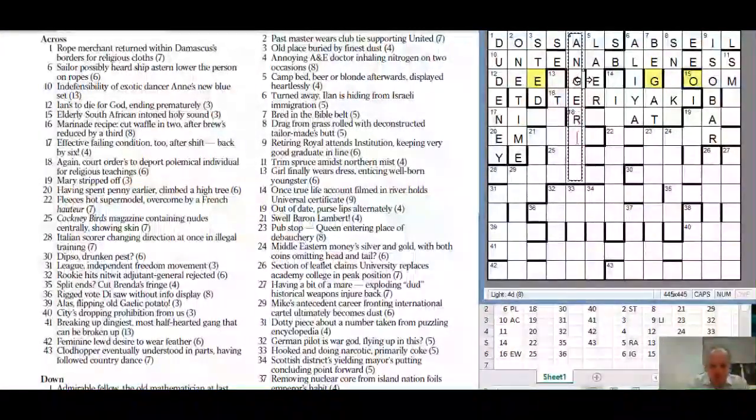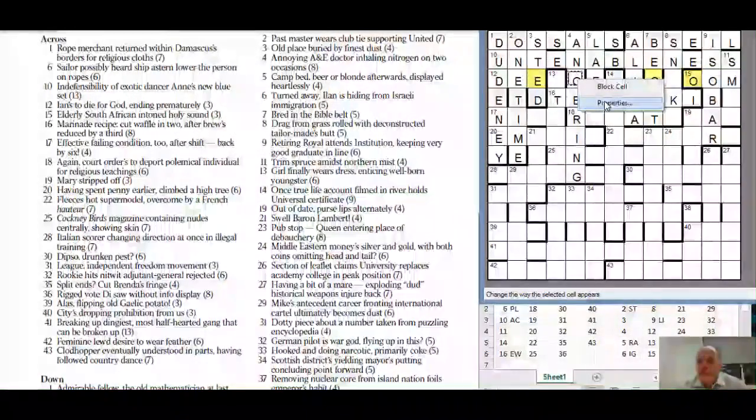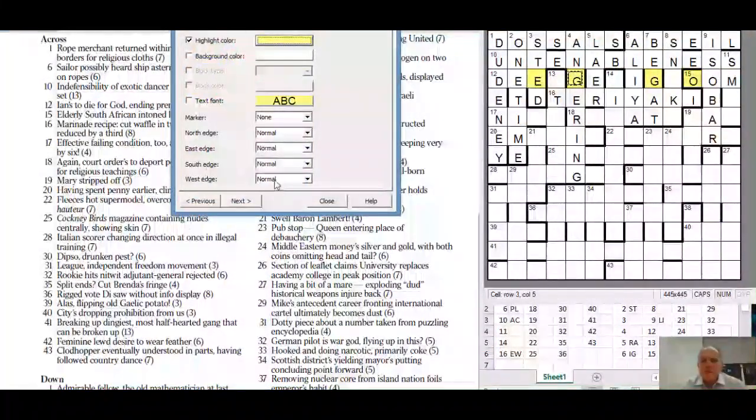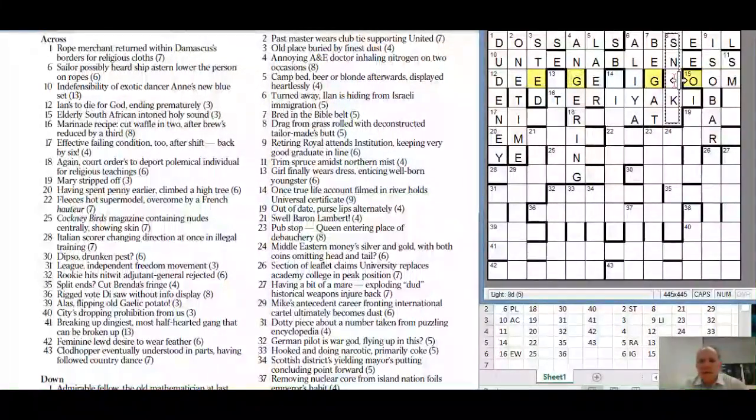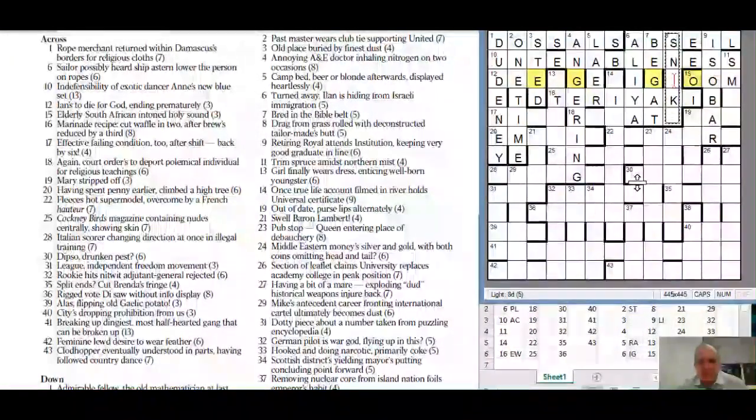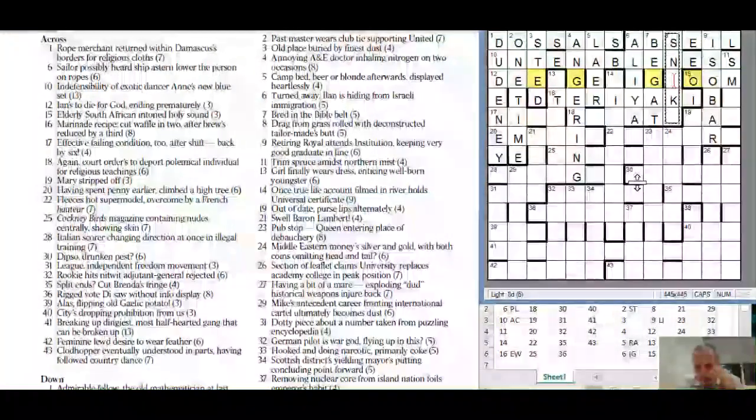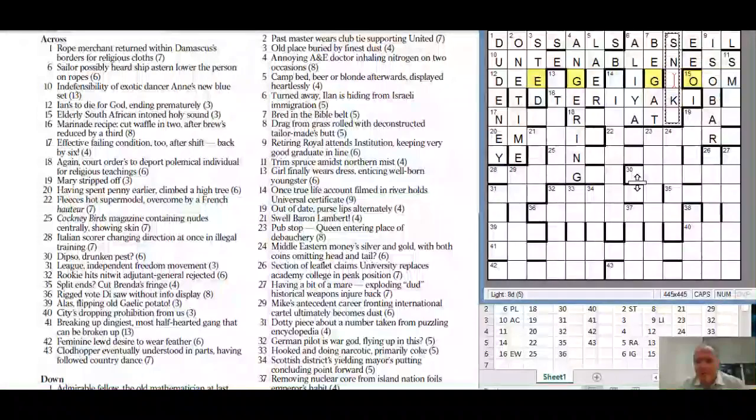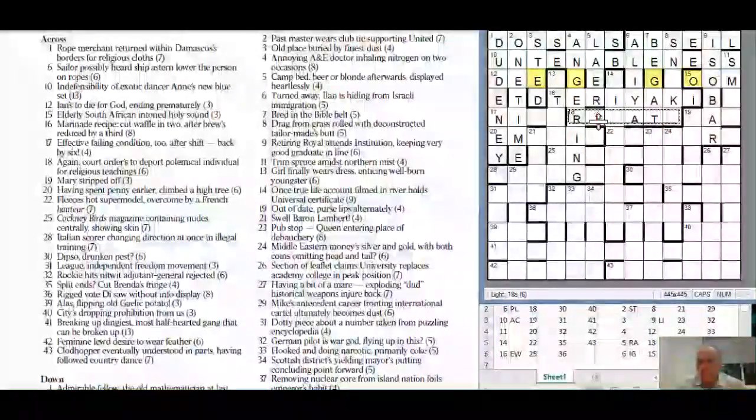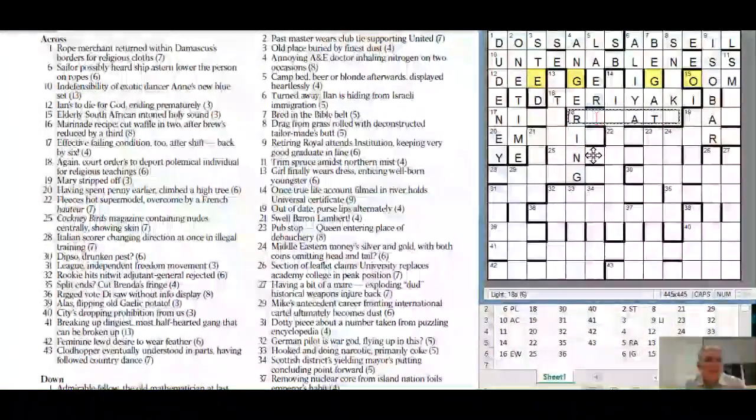Four down: annoying - angering. A-E-RIG inhaling two N's for nitrogen and that G is the extra letter. Look at these extra letters they're forming a very neat pattern of yellows in the grid. Eight down looks like snake - drag from grass rolled.